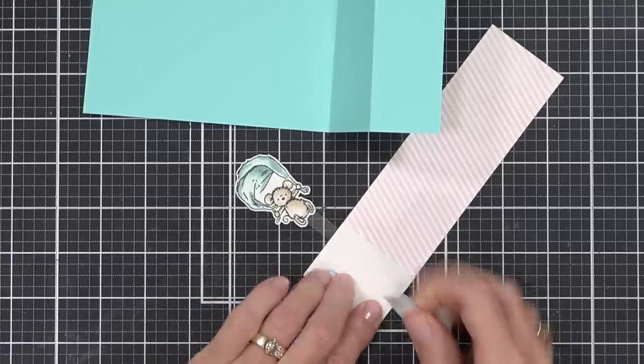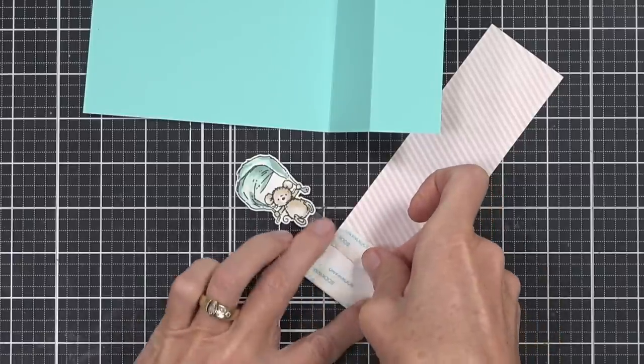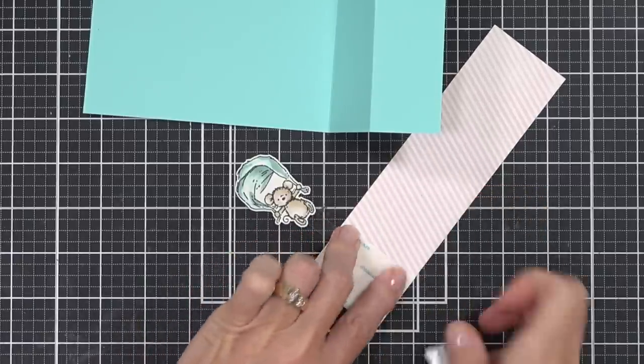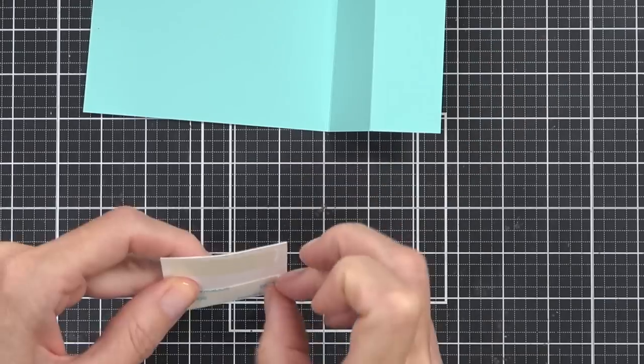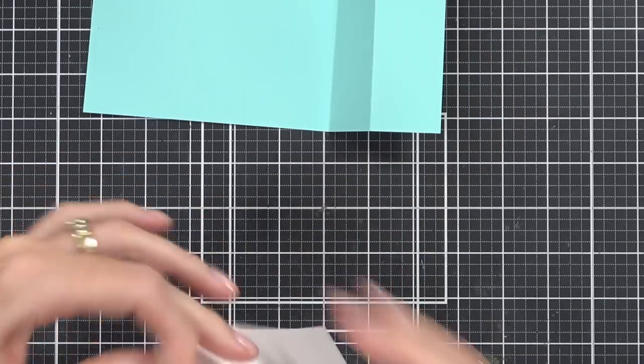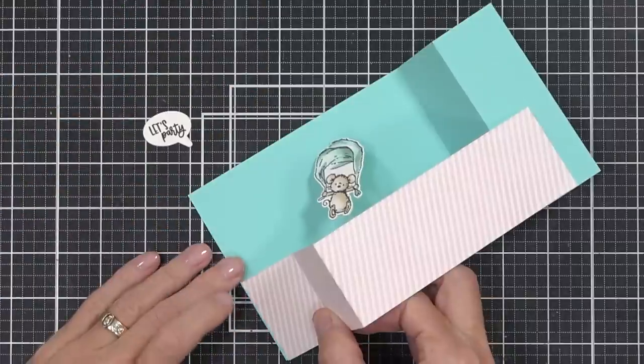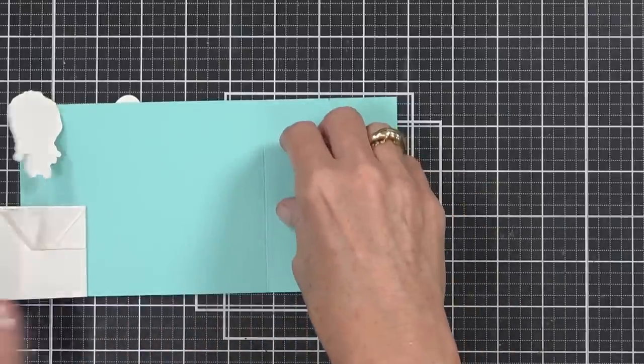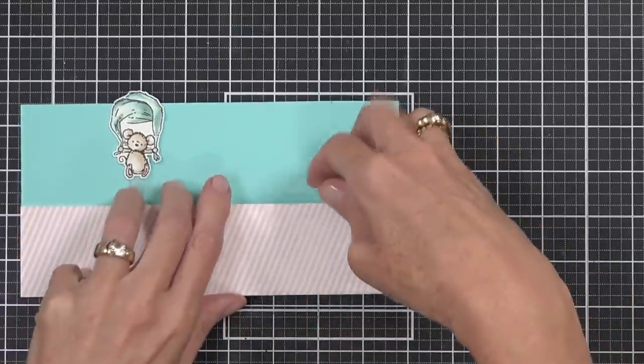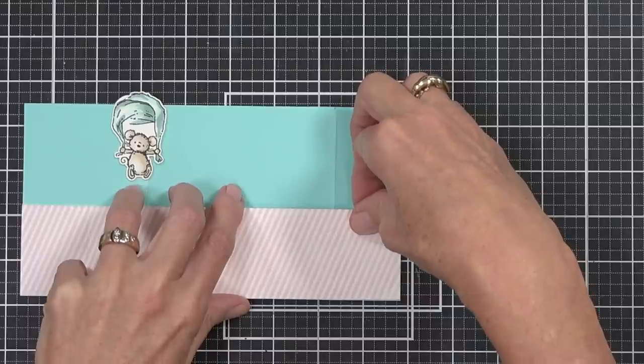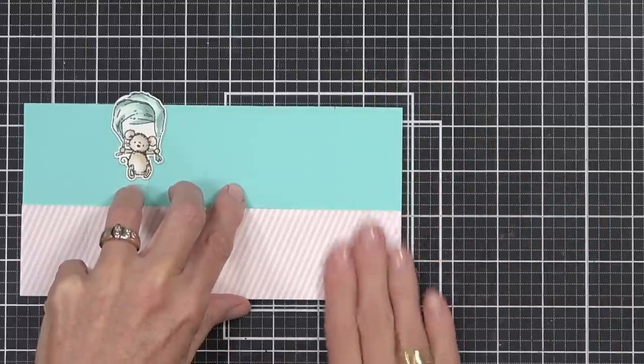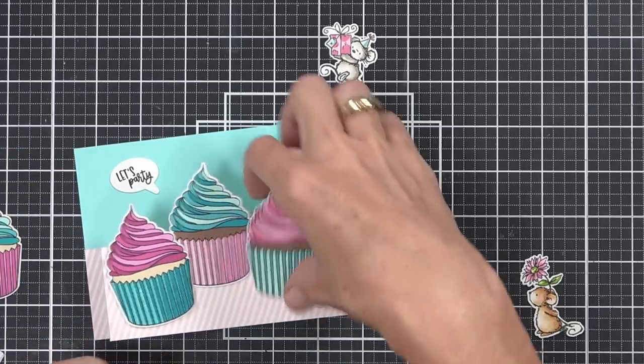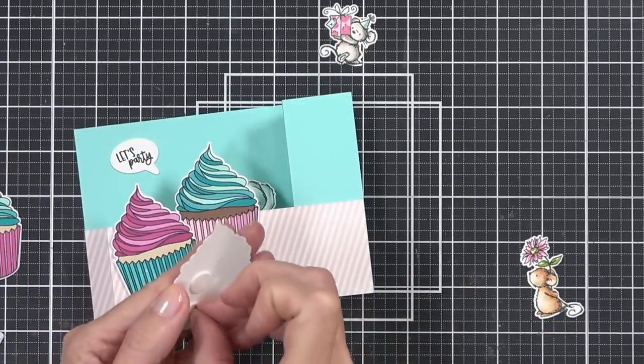I did die-cut a second piece of white cardstock so that I could just cover the back of that as well. To attach the front piece of cardstock, I'm just adding some score tape to both ends and then just simply adhering my smaller piece of cardstock to the base of the card that I created.